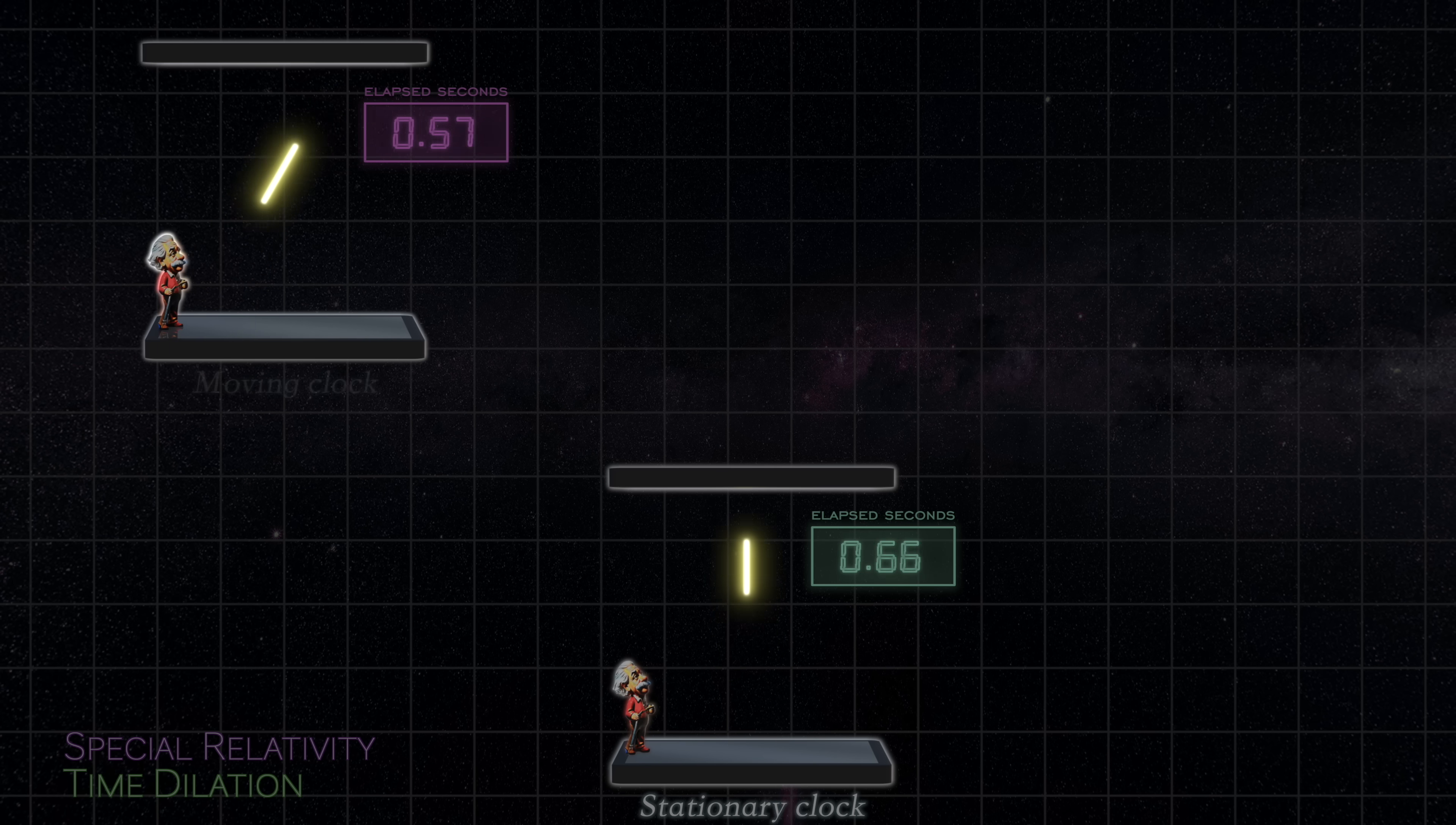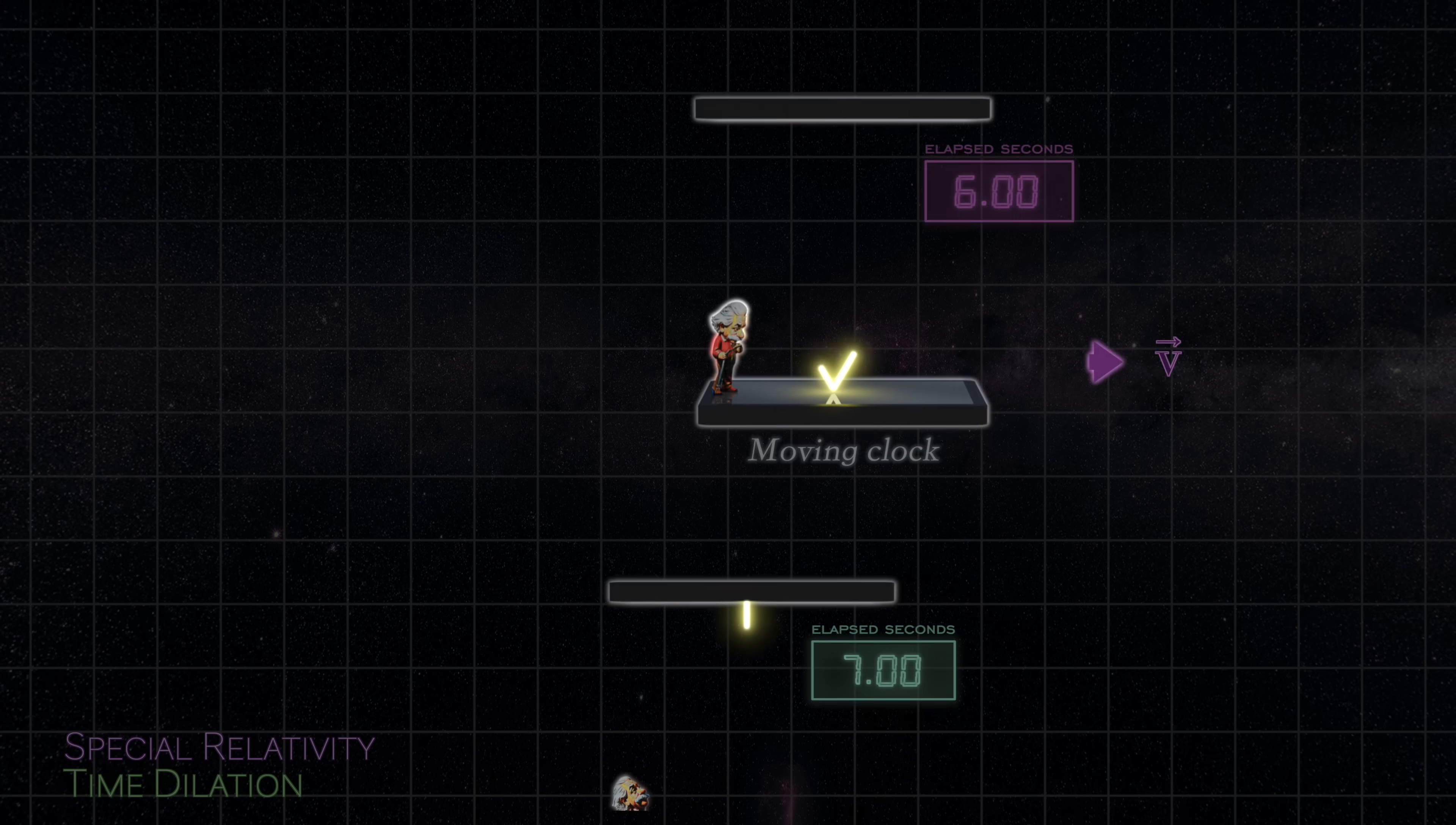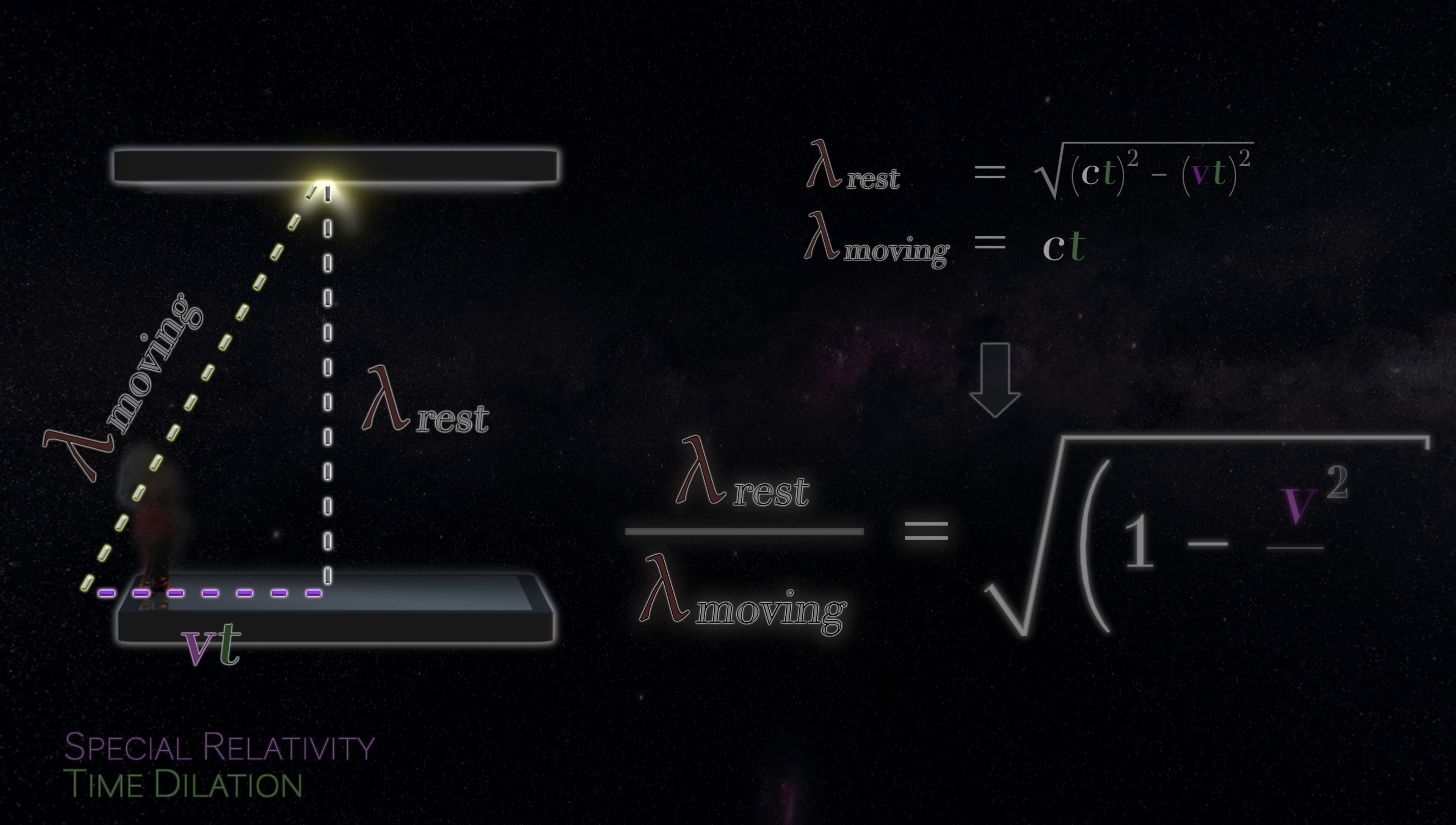When a clock is set into motion, the light signals traversing it have a farther distance to travel to reach their destination. Consequently, the clock's ticking is slowed. For a clock moving at some constant velocity v, the degree of this dilation can be calculated via the basic Pythagorean theorem and takes the form of the square root of 1 minus v squared over c squared.